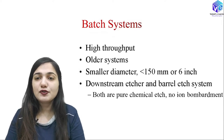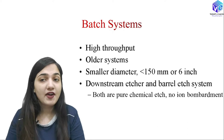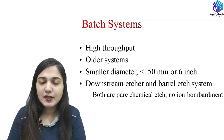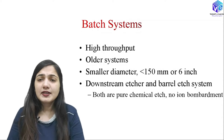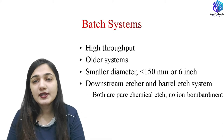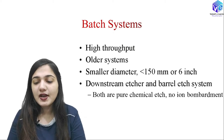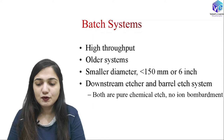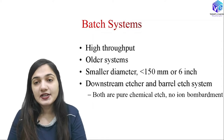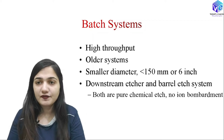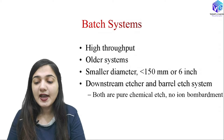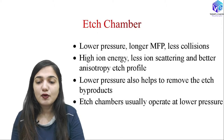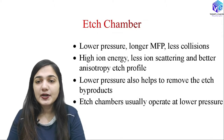In the batch system, we get higher throughput because we are processing multiple wafers at the same time. It is an older system using only chemical processing — pure chemical etching with no ion bombardment. We can have the downstream etcher and the barrel etch system. The diameter in this system is less than 150 mm or less than six inches.